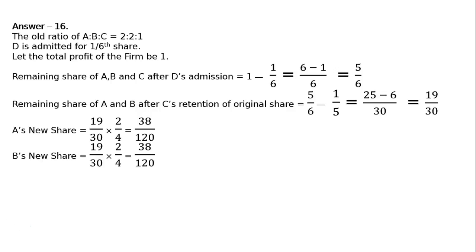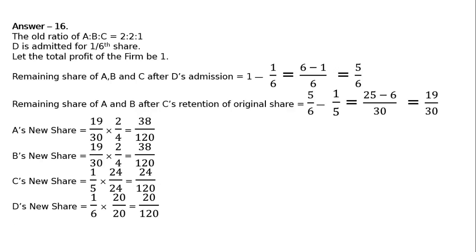C's new share: C retains its original share of 1/5. To make the denominator 120, multiply by 24/24, giving 24/120. D's new share is 1/6 multiplied by 20/20 to make the denominator 120, which gives 20/120.